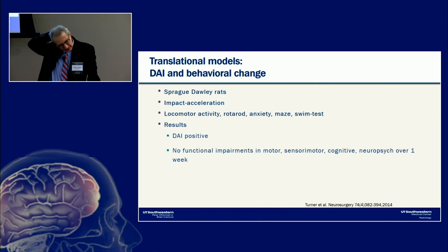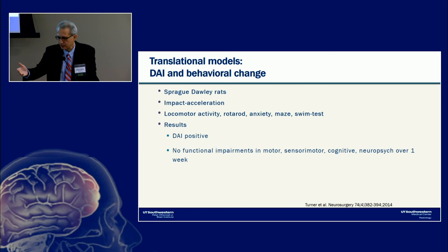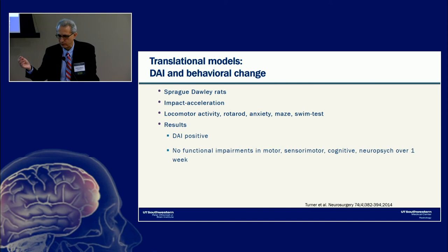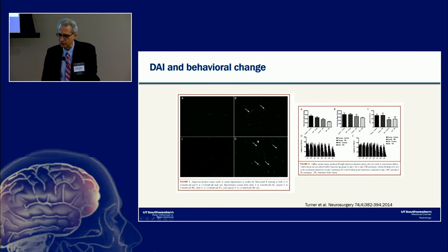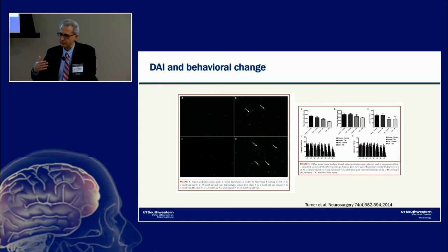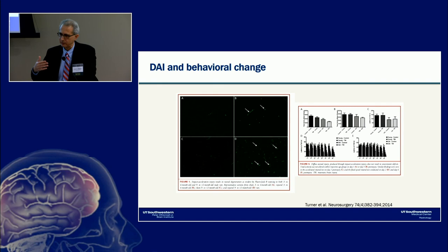A note of caution regarding translational animal models: a study in Sprague-Dawley rats using an impact acceleration model showed extensive diffuse axonal injury on pathology, but no functional impairments in motor, sensorimotor, or cognitive neuropsychological measures over one week. This illustrates that pathological changes don't always translate to detectable behavioral changes, and animal models must be interpreted carefully when applied to human populations.